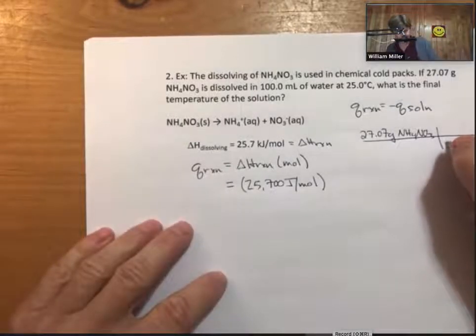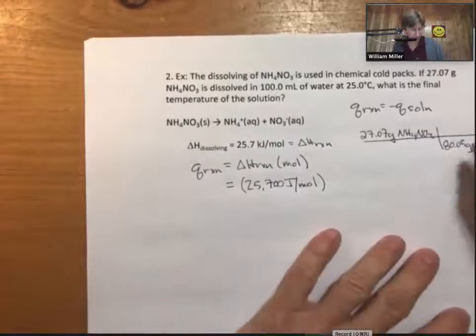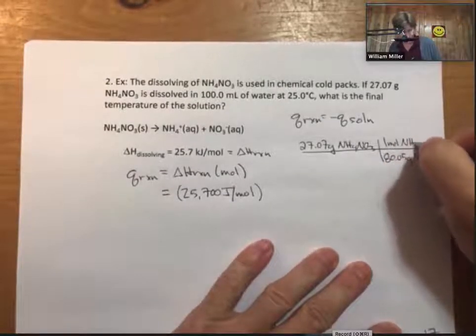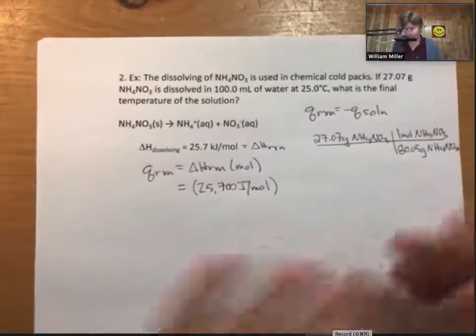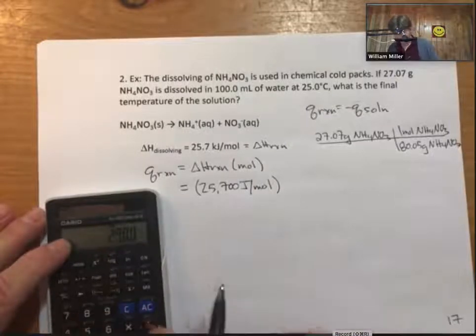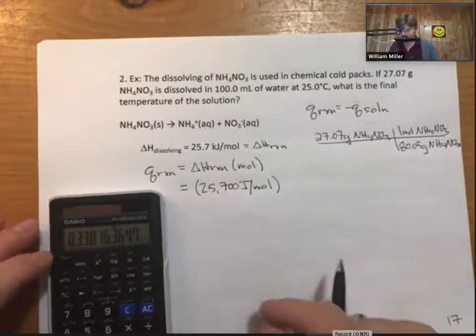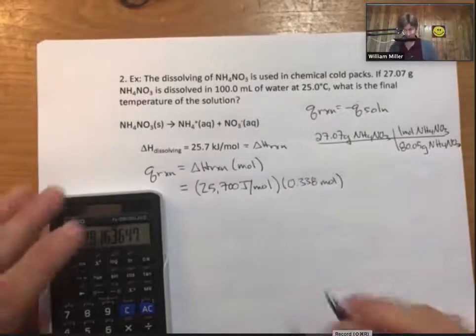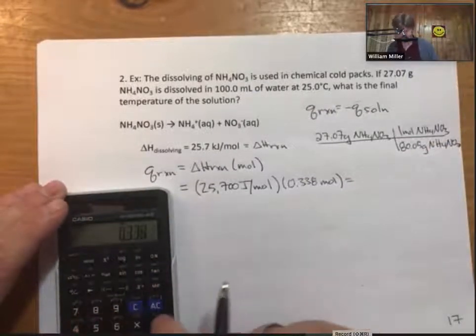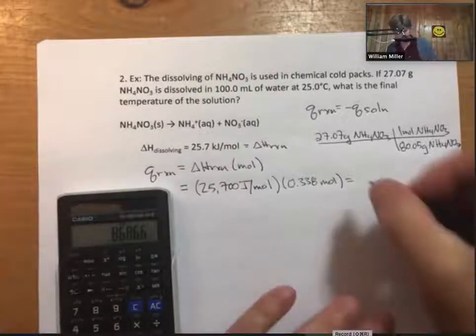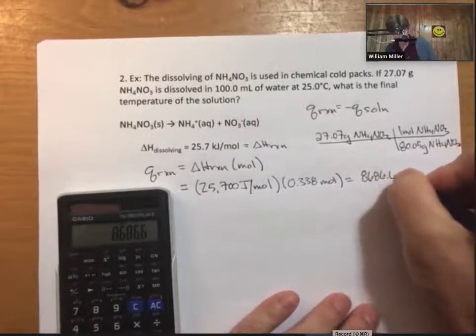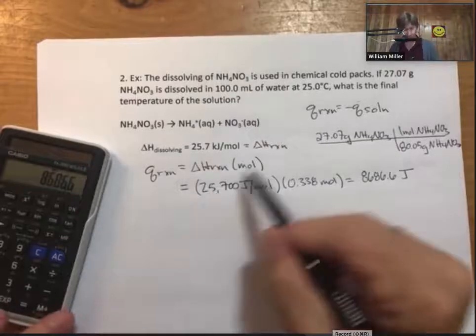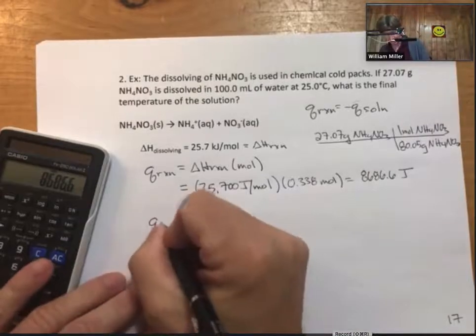That's 25,700 joules per mole. I move the decimal point three places to the right to turn kilojoules into joules. To get my moles, I use the molar mass of ammonium nitrate, which is 80.05. Using 27.07 grams of ammonium nitrate, when I multiply this out I get 0.338 moles. There's only one reactant so it must be the limiting reactant. I get 8686.6 joules. That is a Q value. My Q value for reaction with a minus sign gives Q solution.